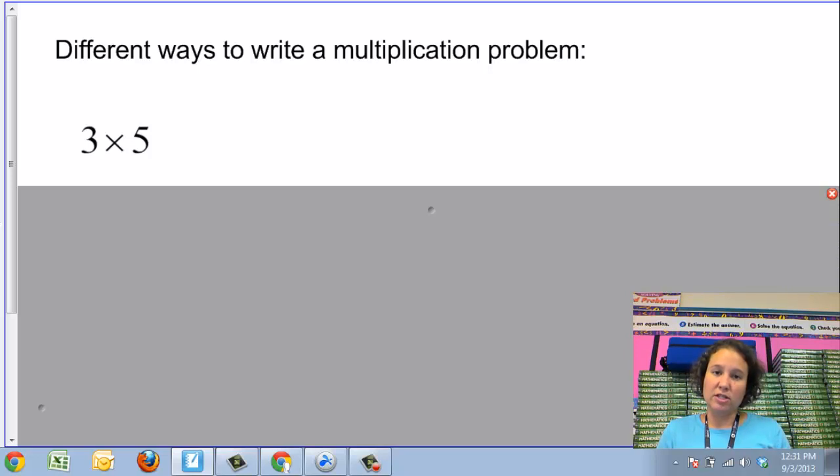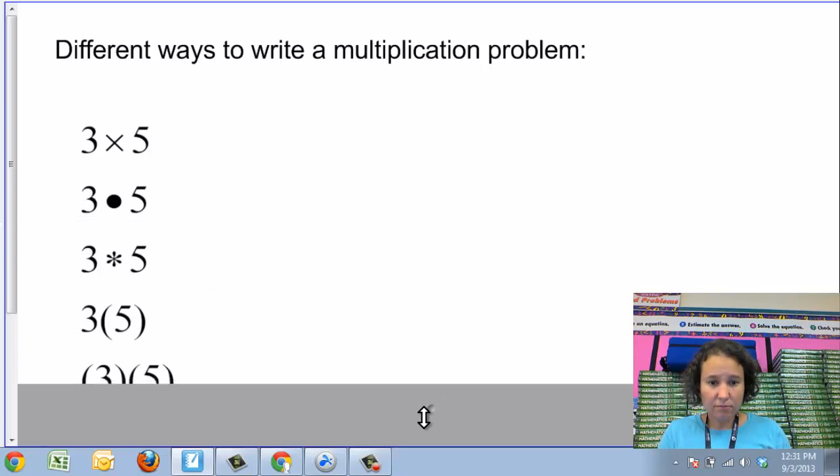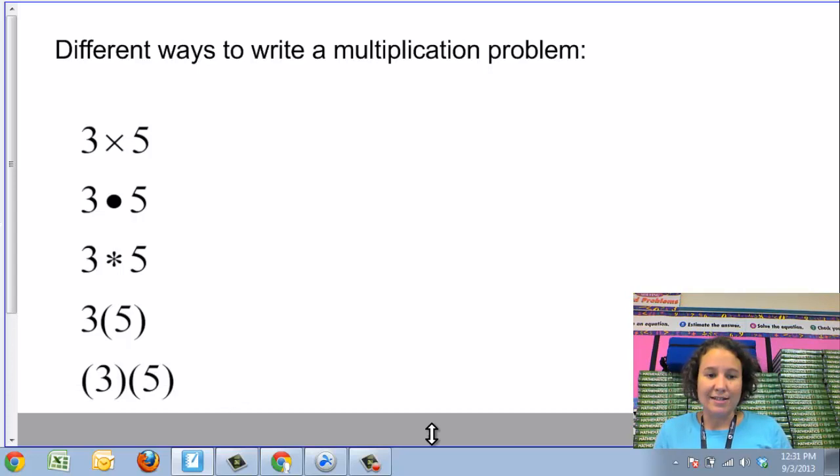This section of the book does talk about different ways to write a multiplication problem. So you have your traditional little x symbol, the times symbol, but we don't use that very often because it can be confused with an x once we get into pre-algebra and algebra when we're writing equations with variables. So some other ways of showing multiplication would be we can use a dot, 3 dot 5, raised up off the bottom line so it's different than a decimal point. We can use a star or we can use no symbol at all and just have it in parentheses.